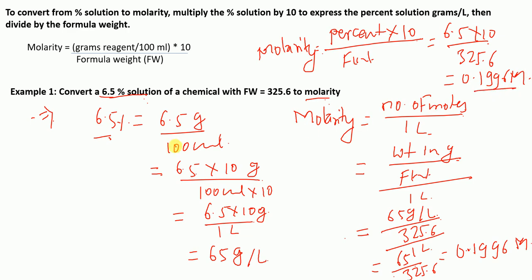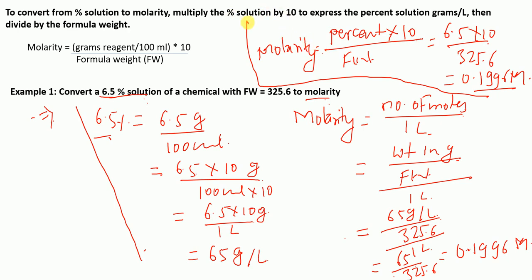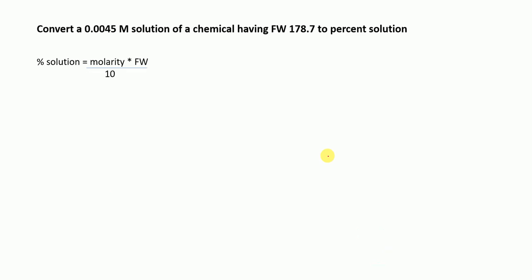That was the explanation, and in short you can use this formula directly. Now moving to another question: convert 0.0045 molar solution of a chemical having formula weight 178.7 to percent solution.